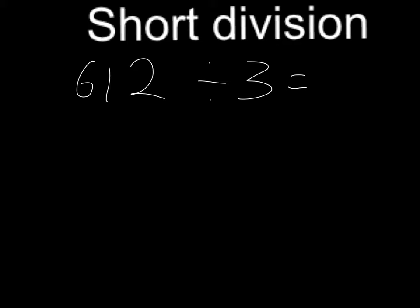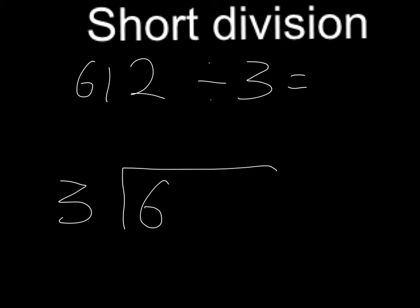Hi, so today we're going to show you how to do short division methods. So let's do 612 divided by 3. We're going to write the 3 here and do a bus shelter and write the 612 in it.